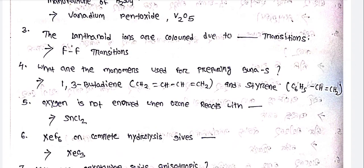The lanthanoid ions are colored due to f-f transitions.